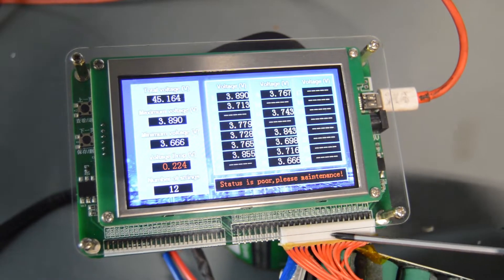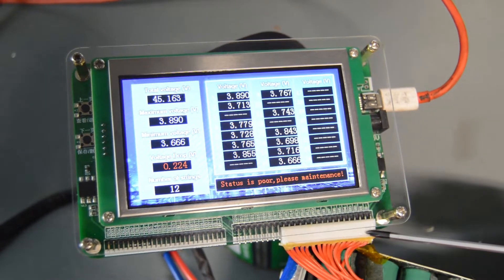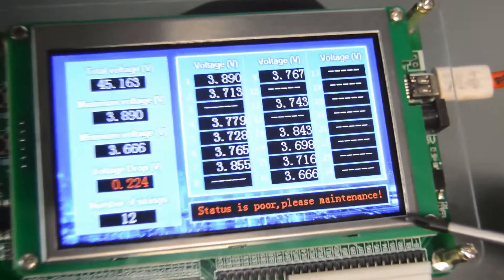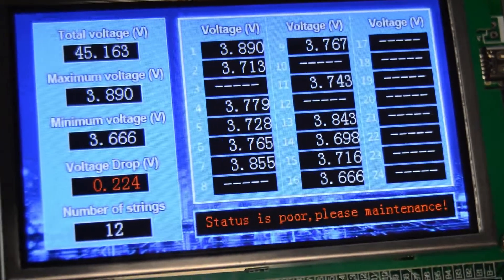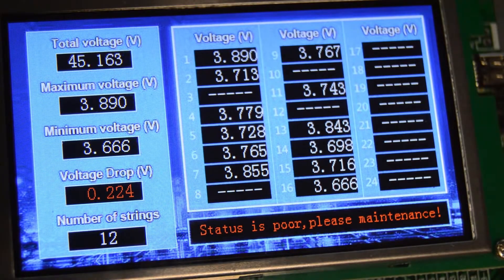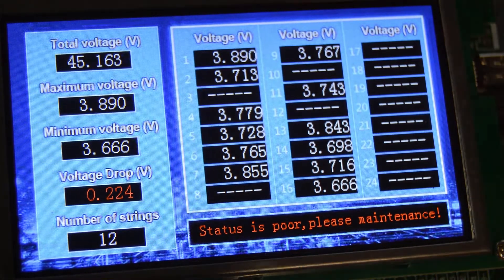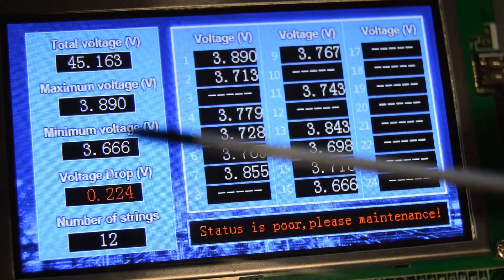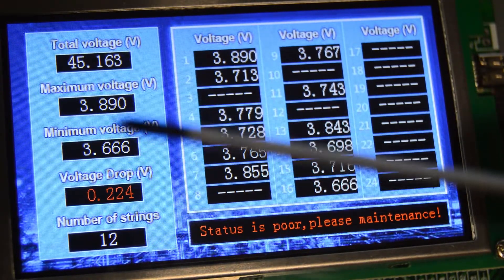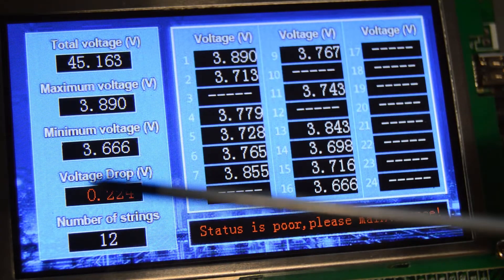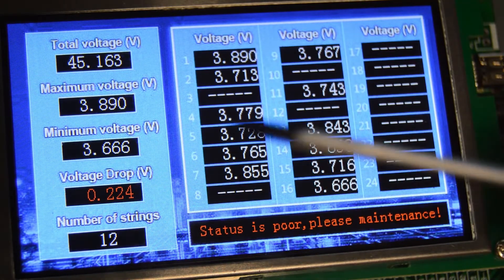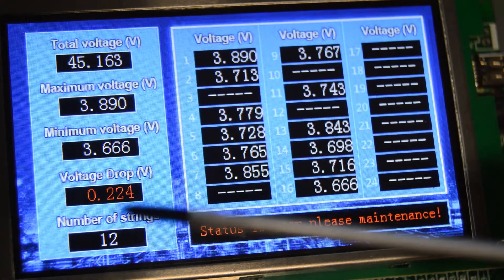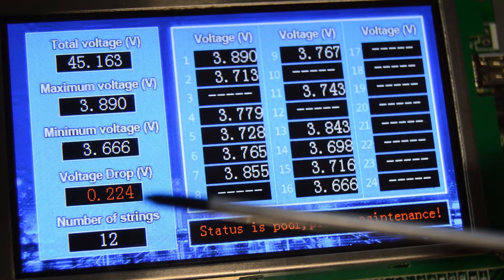In this next step, what we've done is we've disconnected these sense wires from the BMS and connected them directly to our Kilovolt balance tester. This basically enables us to see what each and every wire is sending back to the BMS. We've got the total voltage, so this is the voltage of all the groups. Maximum voltage is the highest voltage group, which happens to be group one. This is the minimum voltage, which is group 3.666, quite ominous that.